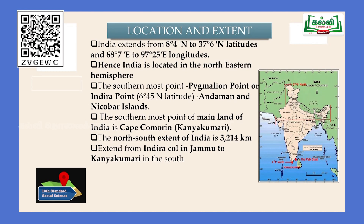In this map, the vertical lines show the north-south and east-west extension of India. India extends from 8 degrees 4 minutes north to 37 degrees 6 minutes north latitude, and 68 degrees 7 minutes east to 97 degrees 25 minutes east longitude. Hence India is located in the northeastern hemisphere. This is a very important question regarding India's latitudinal and longitudinal extension.